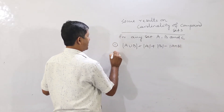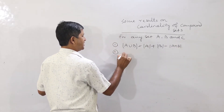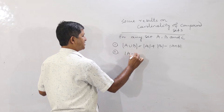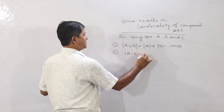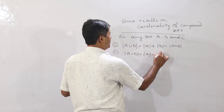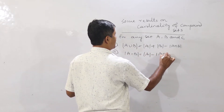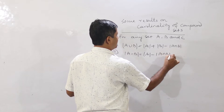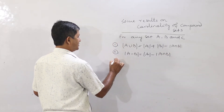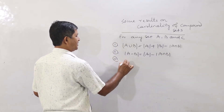Second result: the cardinality of A difference B equals cardinality of A minus cardinality of A intersection B.